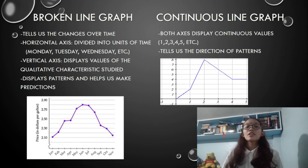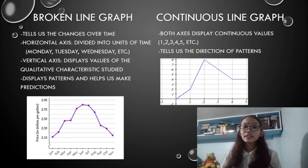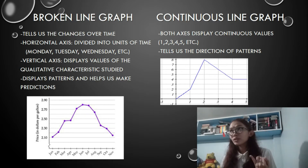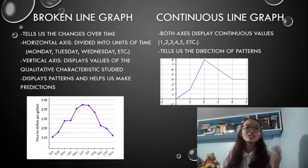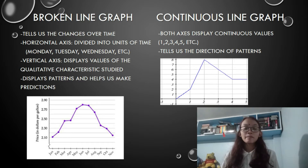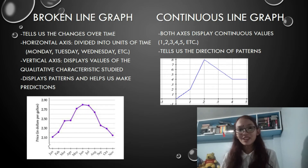The vertical axis displays the values of the qualitative characteristics studied. Meanwhile, the continuous line graph doesn't consist of broken lines and both axes represent continuous values, like 1, 2, 3, 4, 5 and so on. The continuous line graph tells us the direction of patterns, while the broken line graph displays patterns and helps us make predictions.